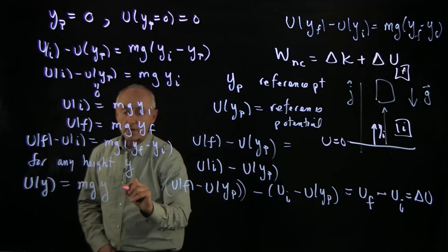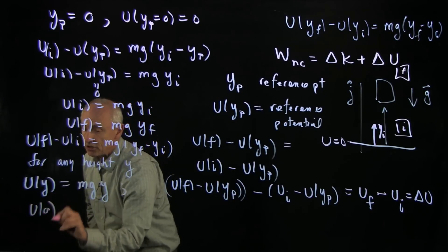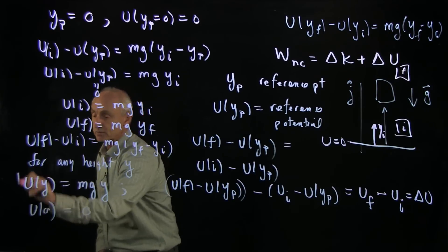That's a formula that many of you have seen before. But it's very important to note that with this formula, u of 0 equals 0 because that's our reference point.